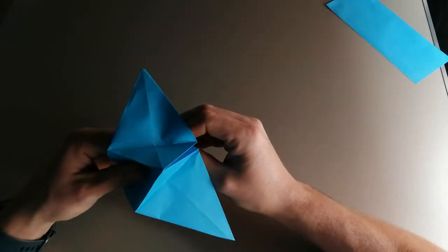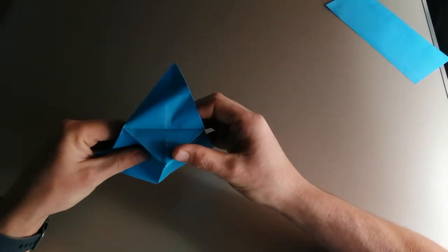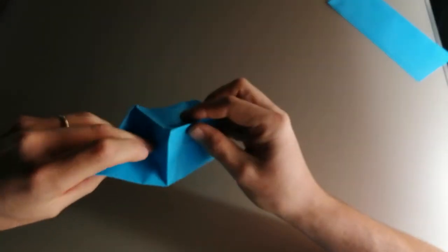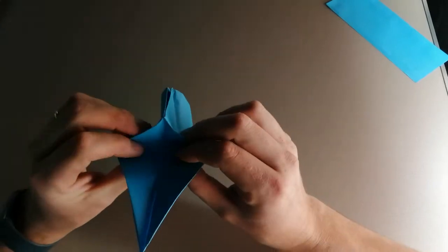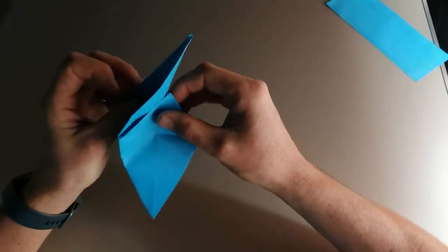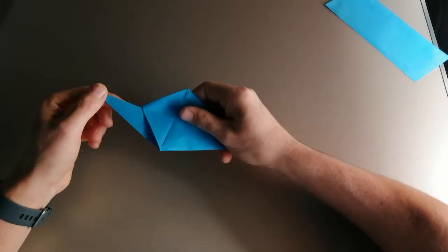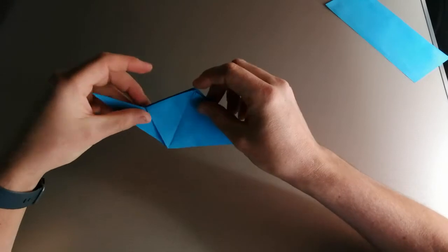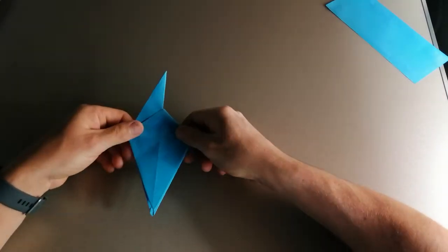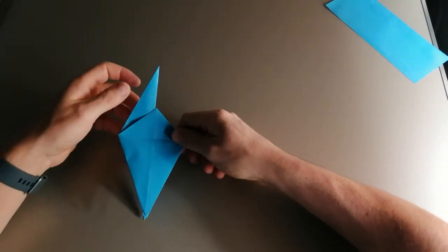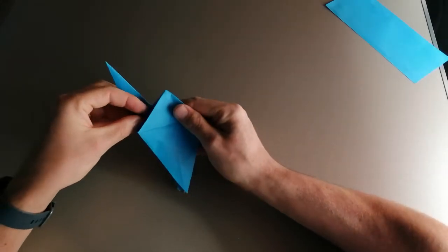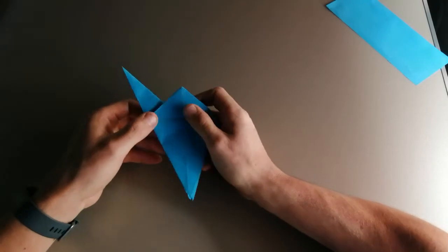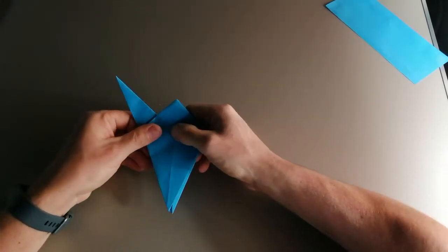So we want to let this fold open. And this front piece we want to lift in an upwards direction like so. But we don't want it to be straight up. We want it at a slight angle. So when we've got it at the angle we want, we're going to press down and make a nice strong crease there.